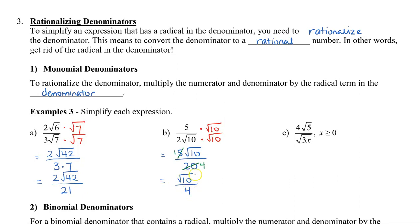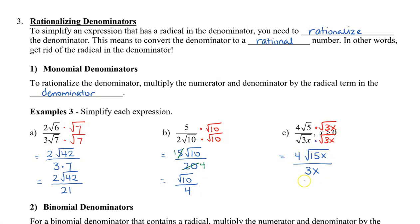Lastly for monomials, let's look at the example with a variable. Same as before, we multiply the top and the bottom by the radical in the denominator — in this case √(3x). This gives 4√(15x) in the numerator. In the denominator, √(3x) times √(3x) gives 3x. I can't simplify further since 4 doesn't go into 3, and 15x is inside the radical while 3x is not.